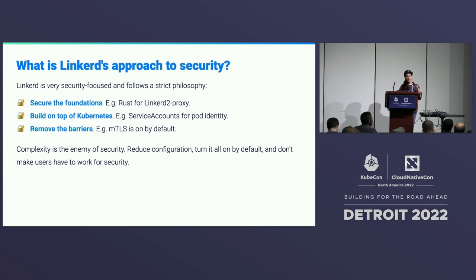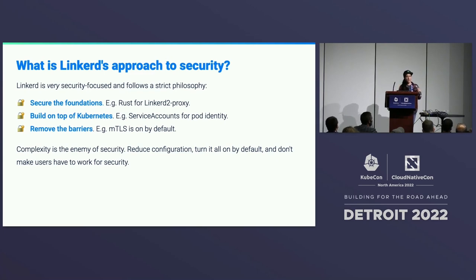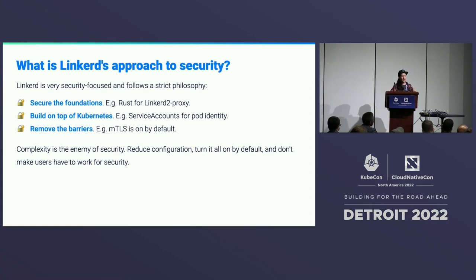This leads into our philosophy on security. We want secure foundations — built on secure libraries in secure languages. We want to leverage Kubernetes as much as possible and be Kubernetes-native. So when doing MTLS, all MTLS identities are bootstrapped from Kubernetes service accounts — that's the primitive we build everything on top of. In order to be secure, you really need to reduce the barriers to security, because security features that nobody uses are not useful. So MTLS is on by default. There's nothing you need to configure because we know you've got a service account — that's your credential to getting a certificate, and once you have a certificate, you can do MTLS.